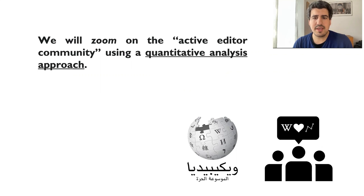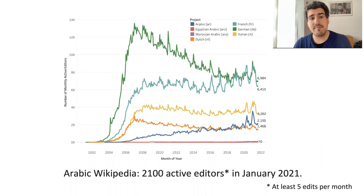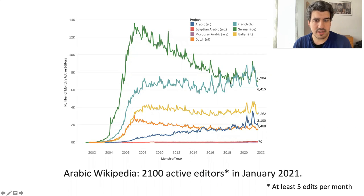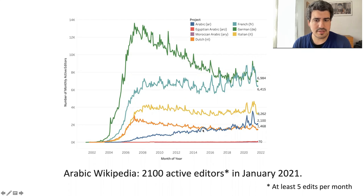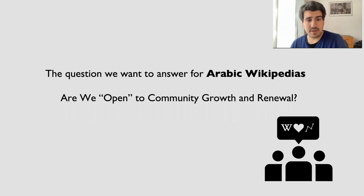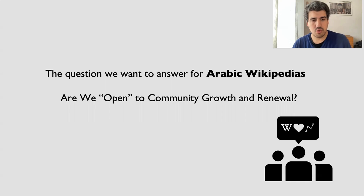To answer our question — is Wikipedia declining in terms of number of editors? — the answer can be very varied. The curve is true for European languages like German or French, with a slight growing as well. But it's quite the opposite for Arabic Wikipedia, shown here in dark blue. We see that it's a slow but steady growth with some peaks last year. So even though Arabic is growing, we want to stay open. We want to answer the question: are we open to community growth and renewal for it to continue?